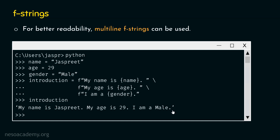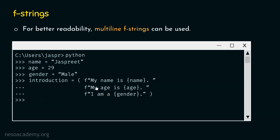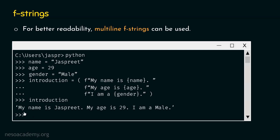Note that we are getting this string in a single line, although we have written f-strings across multiple lines. This concept is about multiline f-strings, not multiline strings. Another way is to use round brackets — we can wrap all the f-strings within round brackets instead of backslashes. If we type introduction and hit enter, we get the same result: my name is Jaspreet, my age is 29, I am a male.